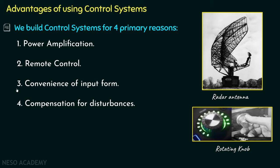The third reason is convenience of input form. Whenever we need to rotate the antenna, we rotate or reposition the knob — in this way we are changing the form of the input. Another example: if we are inside an air-conditioned room and need to decrease the temperature, we use a remote control to adjust the air conditioner. So control systems provide convenience by changing the form of the input.